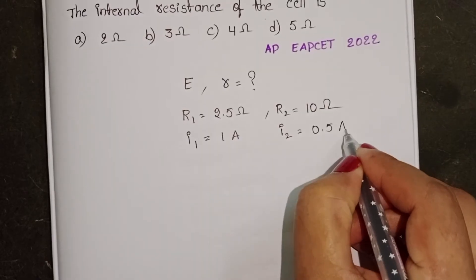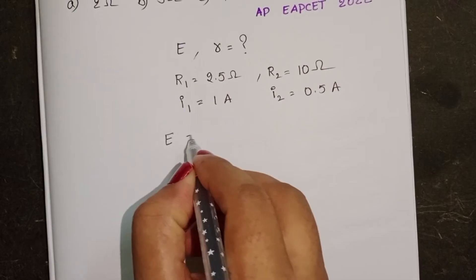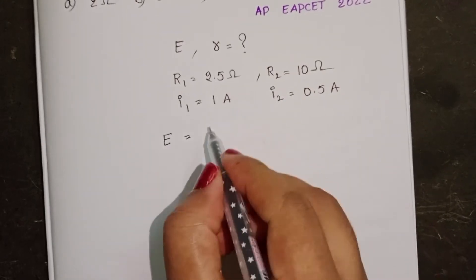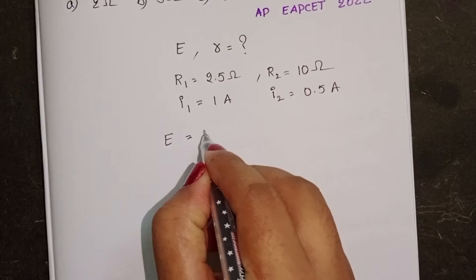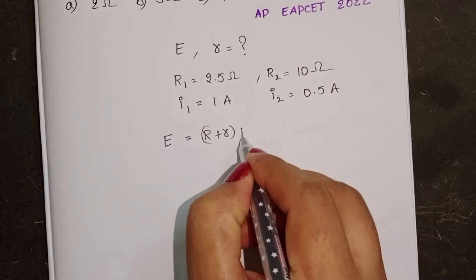We know E is equal to EMF of the cell is equal to total resistance, load resistance plus internal resistance into current.